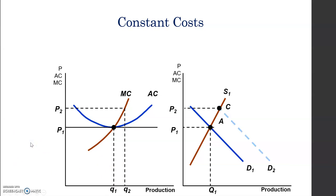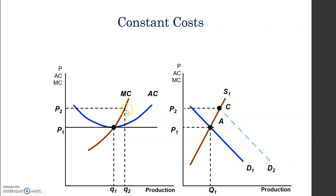Now imagine demand increases — the demand curve shifts to the right from D1 to D2. As a result, the price increases to P2 and the quantity exchanged becomes Q2, because the supply has not yet changed.